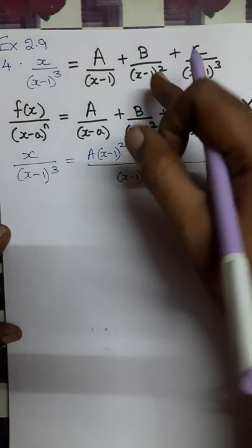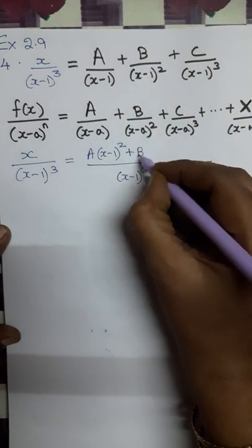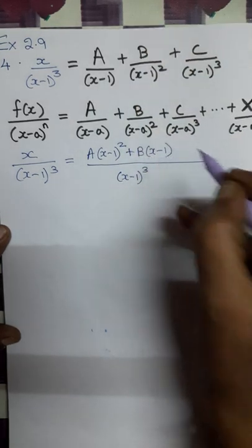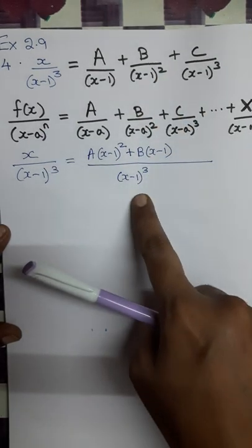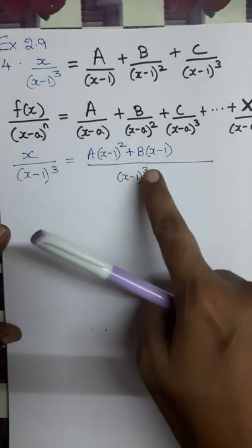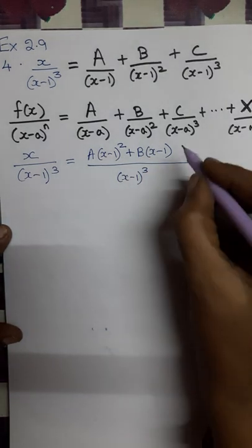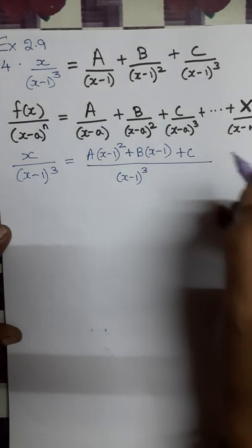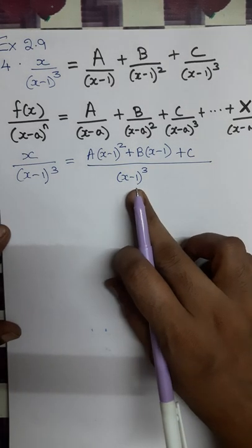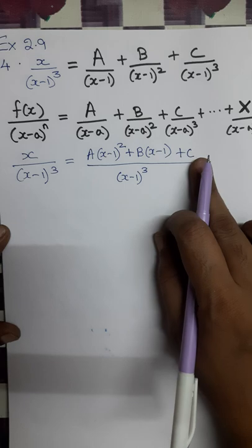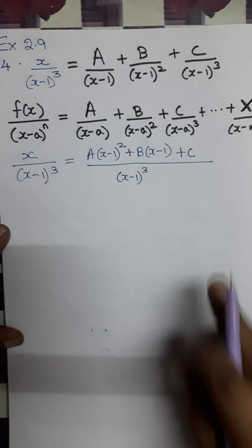Under B, (x minus 1) square is already there, so B is multiplied by (x minus 1) — we already have 2 factors but the LCM needs 3, so we multiply by one more (x minus 1). For the last term, C already has (x minus 1) whole cube underneath, so we need not multiply C by anything; we write C as it is.